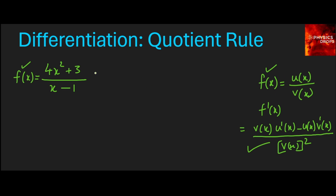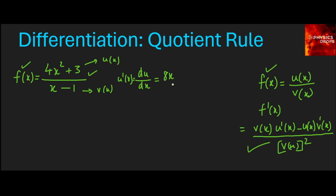Now let's use this to differentiate the given function. The numerator is u(x) and the denominator is v(x). Let's first find the differentiation of u(x), that is du/dx, or u'(x) — both are the same. When you differentiate the numerator alone you get 8x; the constant 3 becomes 0.